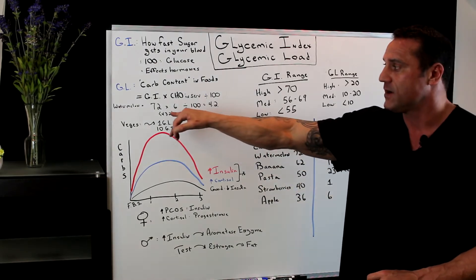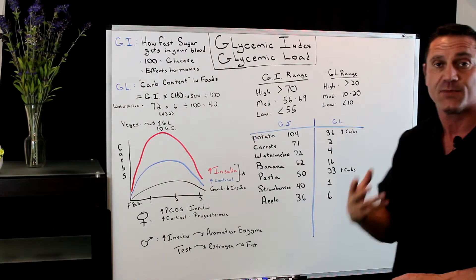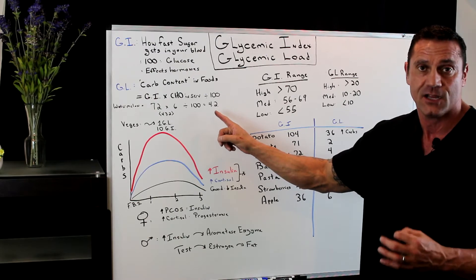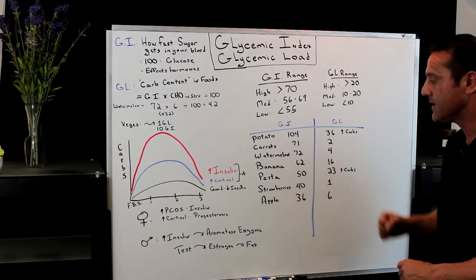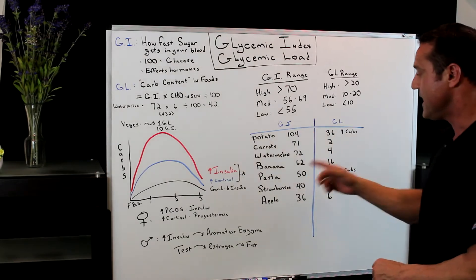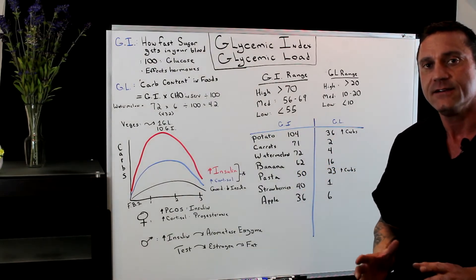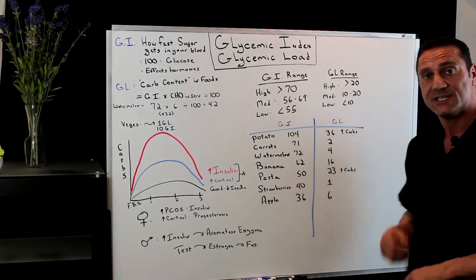Watermelon glycemic index, 72 times the amount of carbohydrates per serving divided by two. This is where they get the glycemic load, 4.2, so they kind of rounded to a lower number. This is the equation. Bananas, 62 glycemic index, very sugary. Bananas are very sugary foods. The glycemic load is only 16.